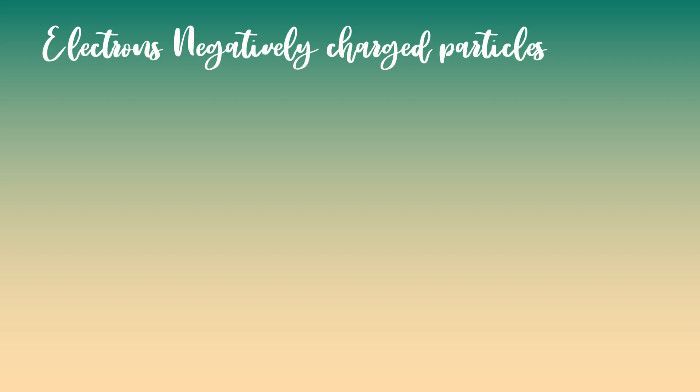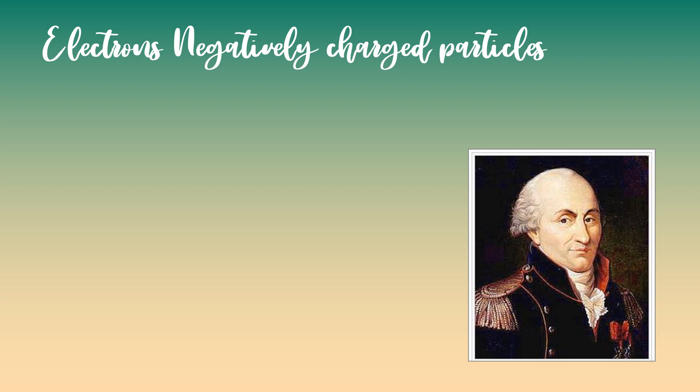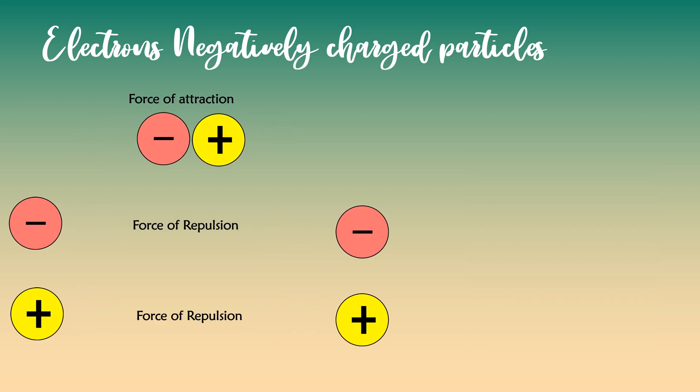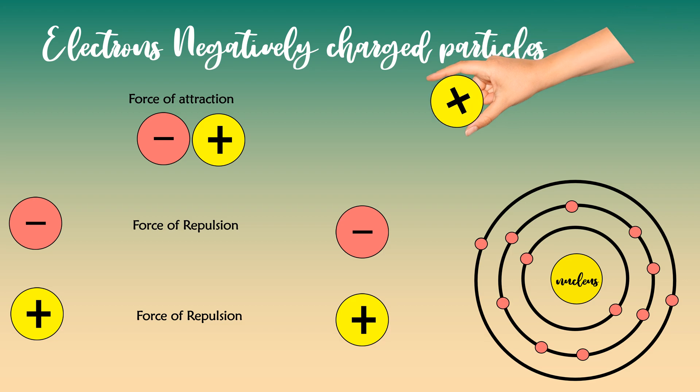We know that electrons are charged particles. Coulomb's law states that there is an electrical force between two charged objects. That is, force of attraction and force of repulsion. We can use these forces to move an electron.